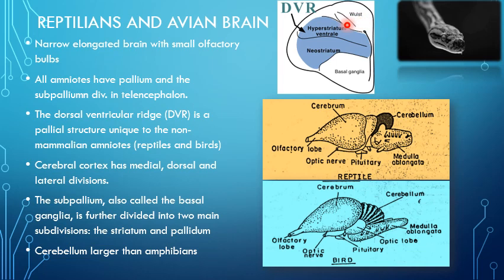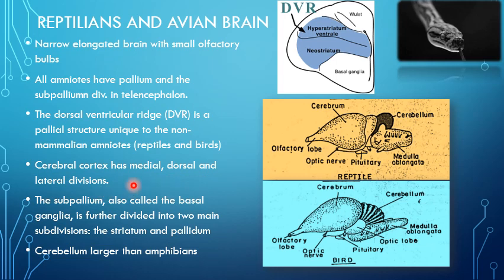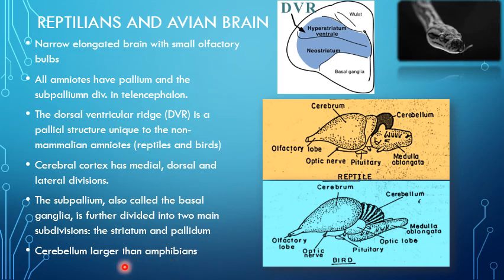In birds, there is an additional area known as the Wulst, adjacent to the dorsal ventricular ridge. The cerebral cortex in amniotes has medial, dorsal, and lateral divisions. The sub-pallium, also called basal ganglia, is further divided into two main subdivisions: the striatum and pallidum. In amniotes, the cerebellum is larger than in amphibians.